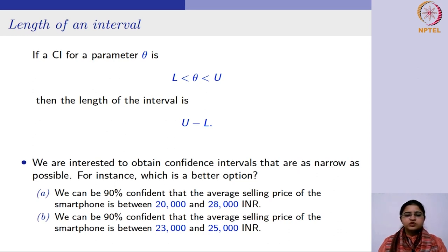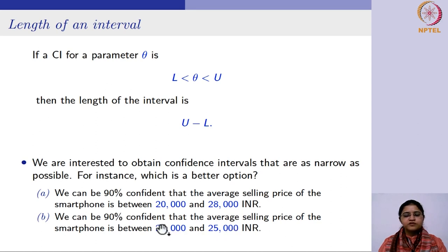Which one is a better option? The one with the lesser range, because in that case it shows you are more confident that this is going to happen with 90% confidence. So the second option is better because you are more confident — the first one has a wider range.